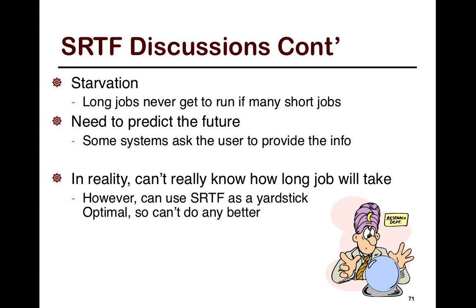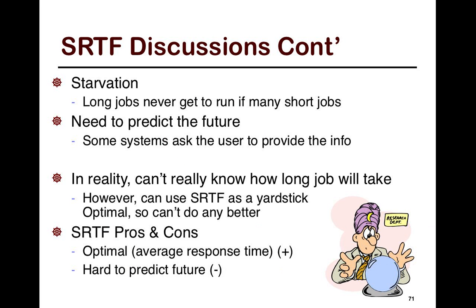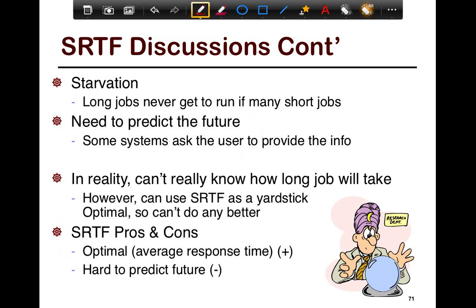There is also the notion of starvation, which I had briefly alluded to earlier, where if you have a lot of small jobs, let's say a hundred of them that take one second, and then one job a hundred seconds, and you schedule all the one-second jobs first, then the hundred-second job essentially has to wait for a hundred seconds. Its response time has become twice. So essentially, long jobs may never get to run if you have too many short jobs. So you kind of have a starving long job.